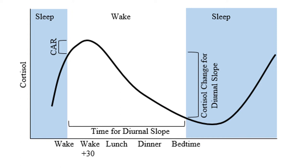On awakening, we have a spike of cortisol, which is also called the stress hormone, and when we fall asleep, we are at a low level of activity and there is the lowest level of cortisol hormone.